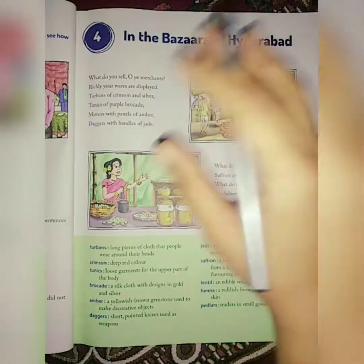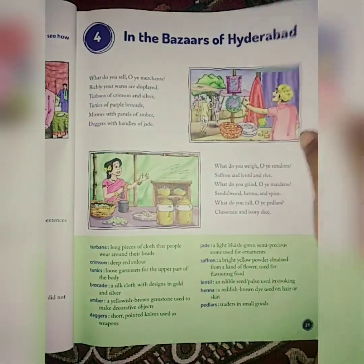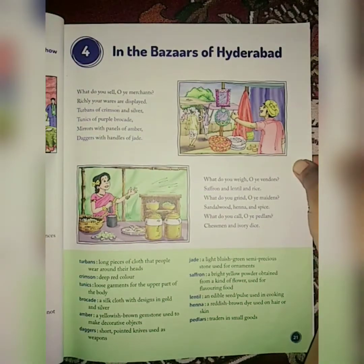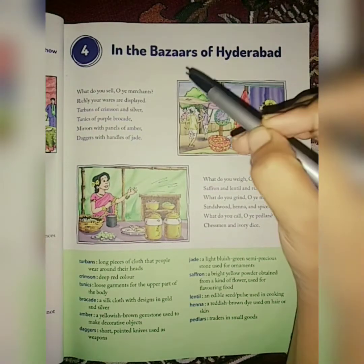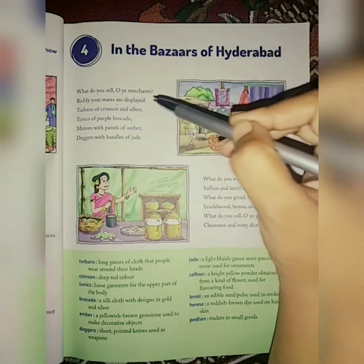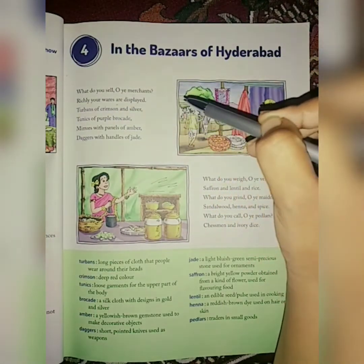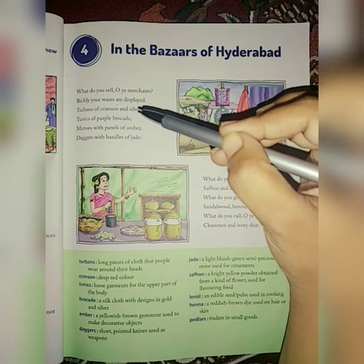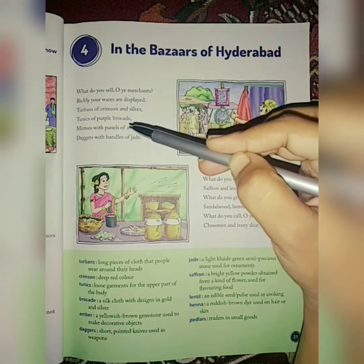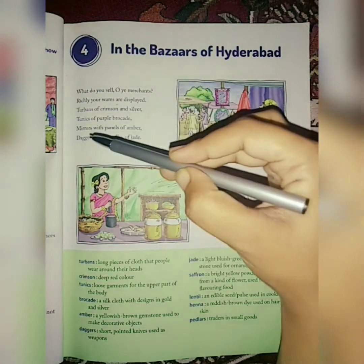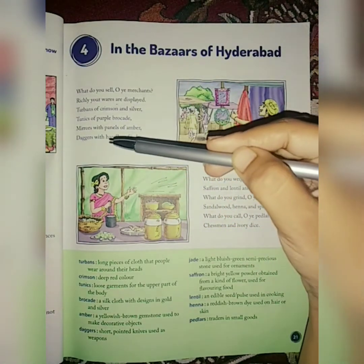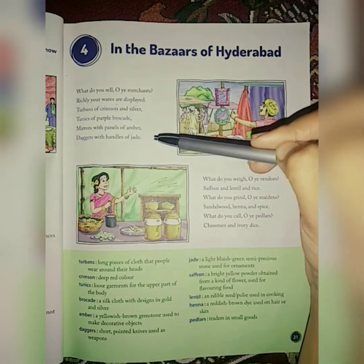We will do paragraph-wise, so let me read the first paragraph. 'What do you sell, O ye merchant? Richly your wares are displayed. Turbans of crimson and silver, tunic of purple brocade. Mirrors with panel of amber, daggers with handles of jade.'